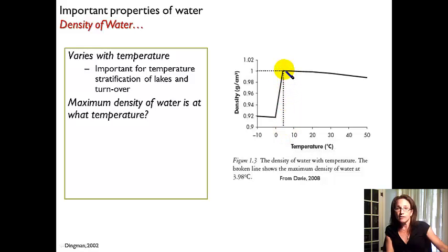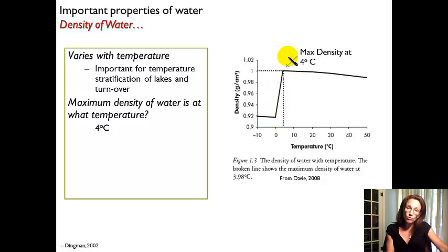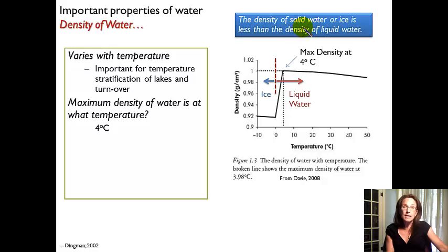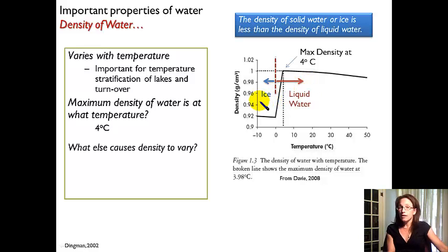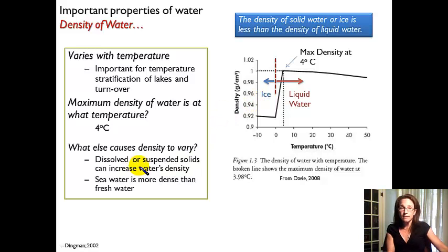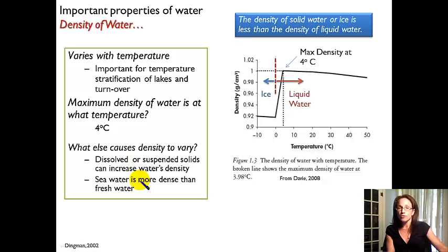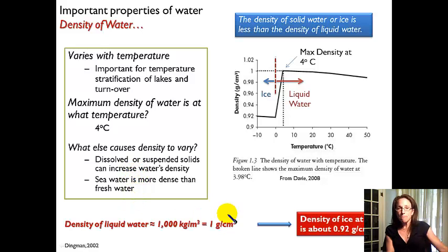We find that the maximum density of water is actually at about 4 degrees Celsius. So in its liquid form, if we cool it colder than 4 degrees, the density decreases — meaning the density of solid water or ice is actually less than the density of liquid water, and as a result ice floats. Seawater also has a different density than freshwater — dissolved minerals and suspended solids can increase water density. We typically use a value of 1 gram per cubic centimeter for density at normal Earth surface temperatures.